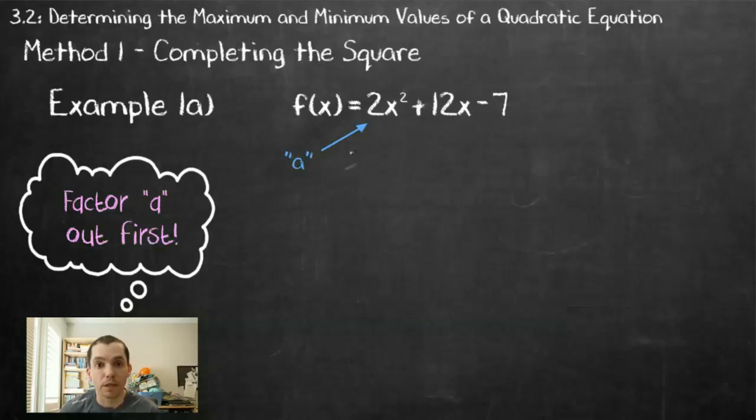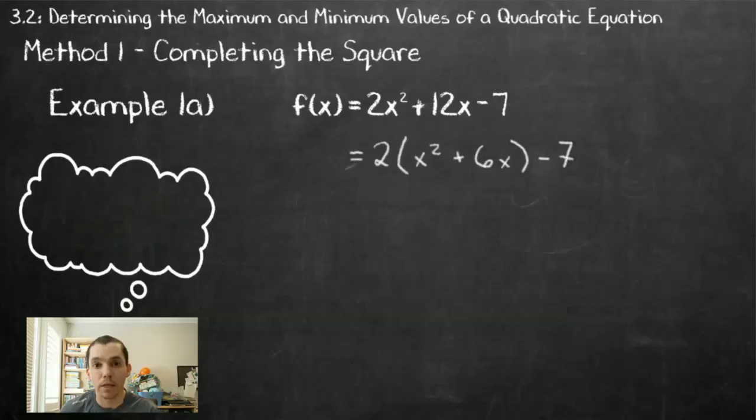When you have an equation in standard form, f of x equals 2x squared plus 12x minus 7, our first step is to factor out that a value from the first two terms. I factor the two out, leaving me with x squared plus 6x. I can leave that minus 7 as is.